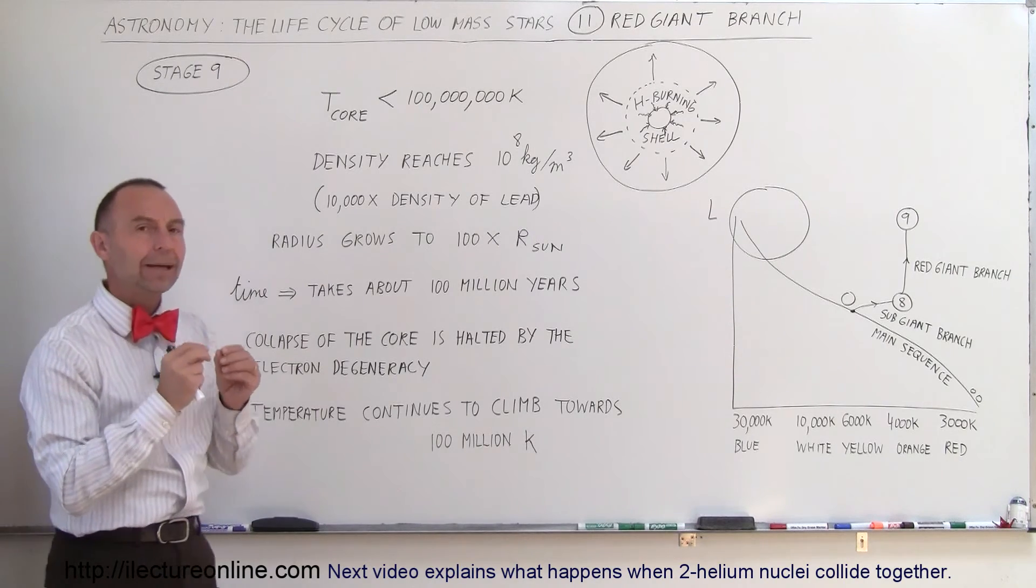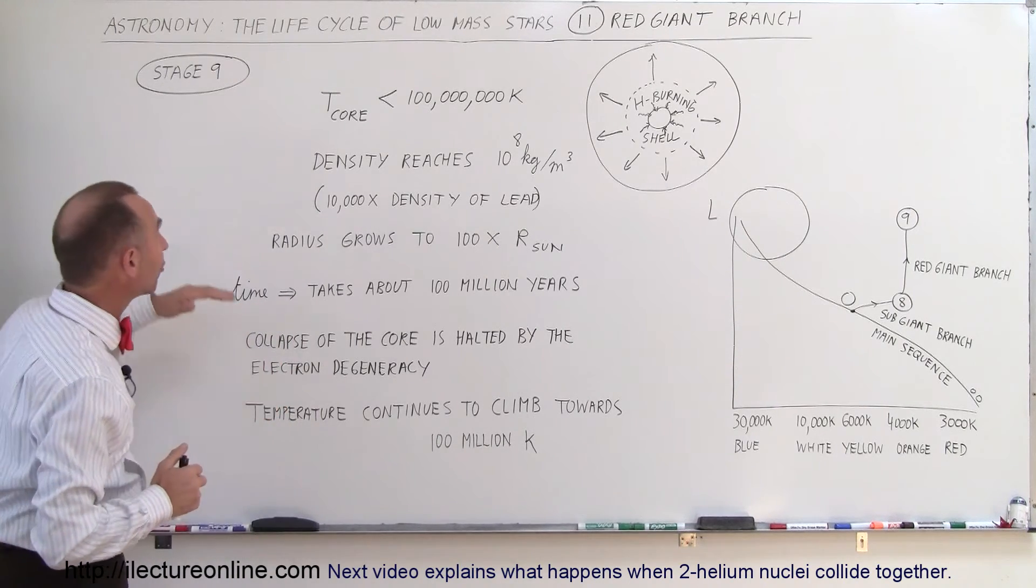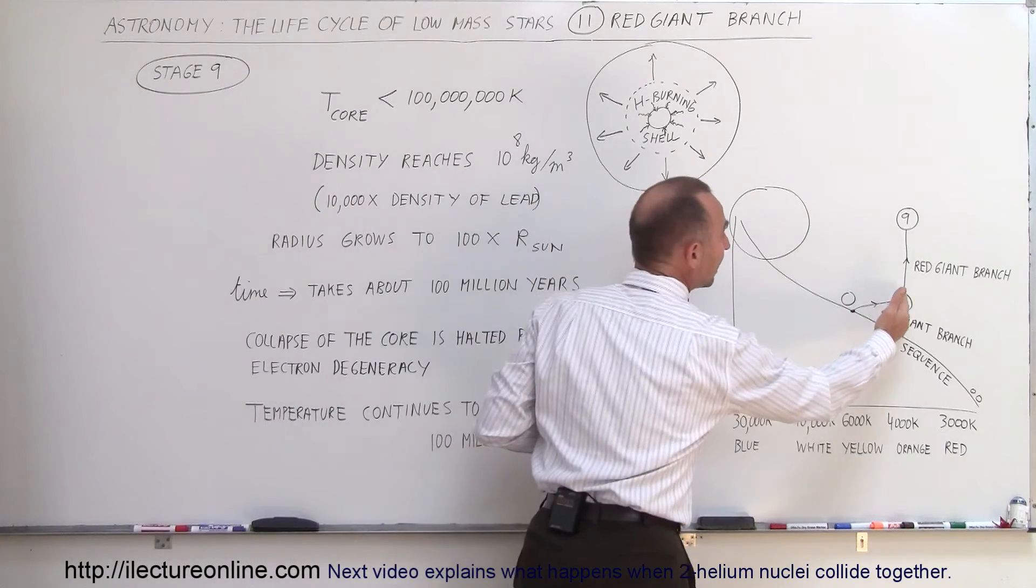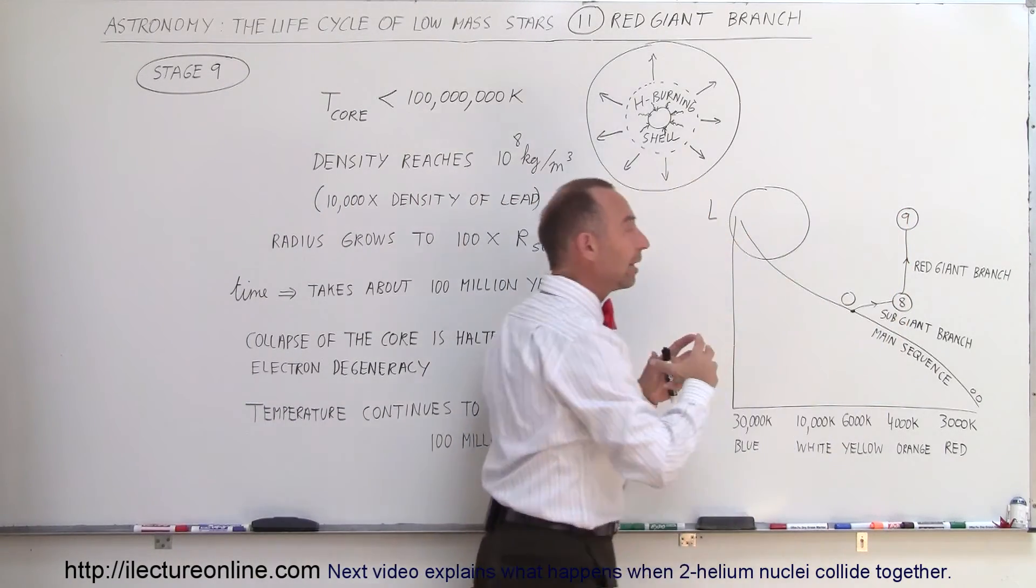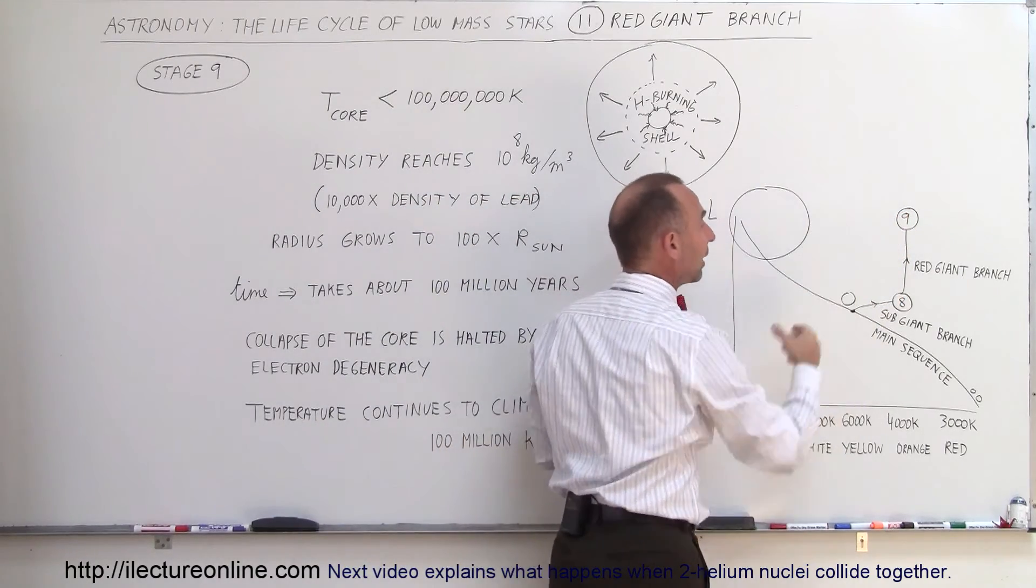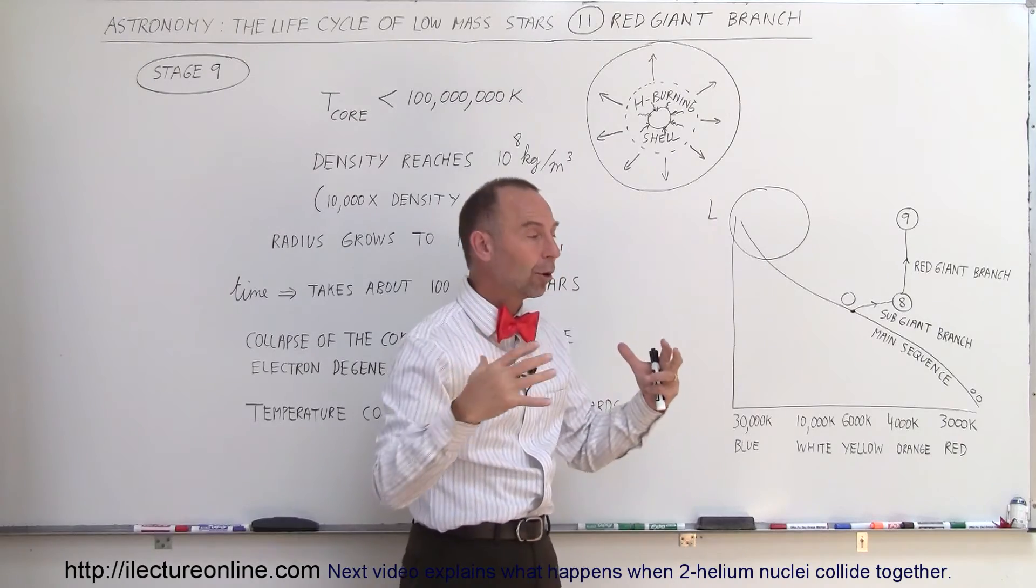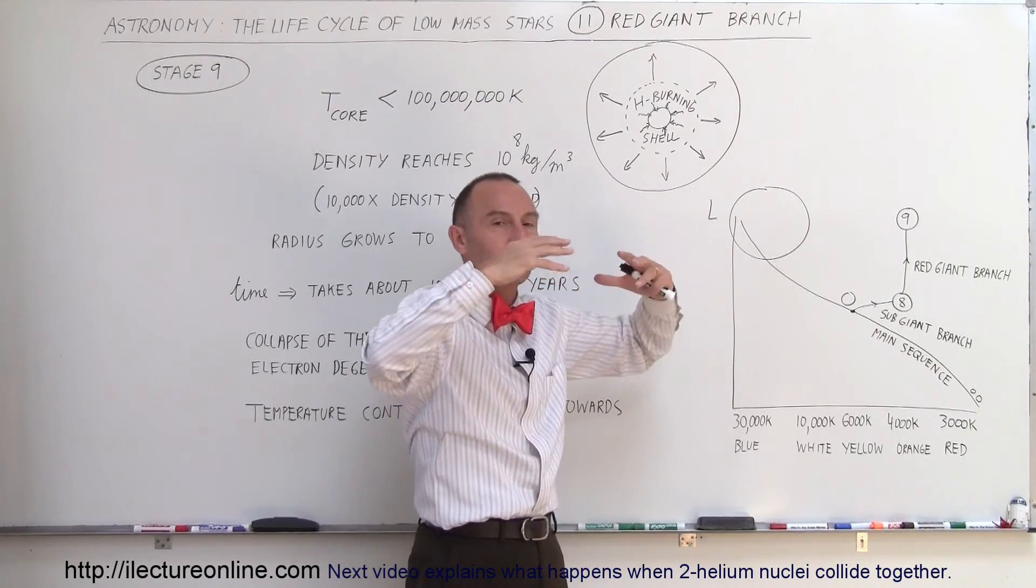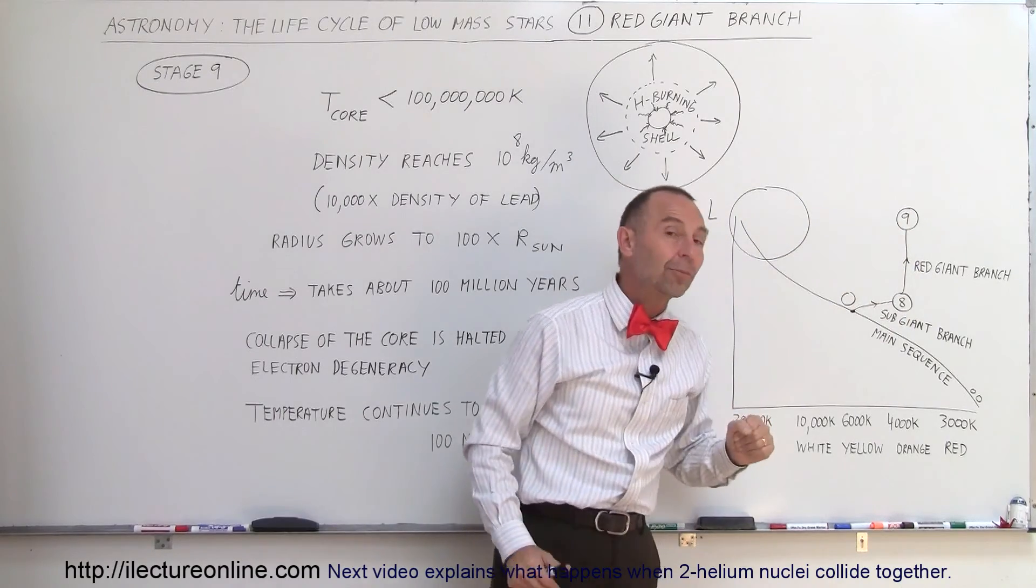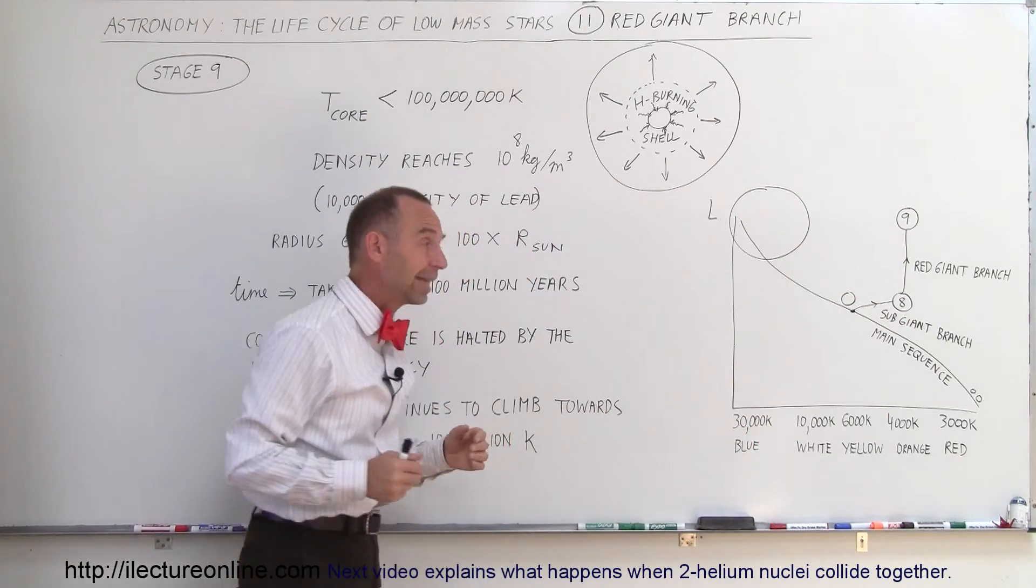Now we're in stage 9 of the star where we're creeping up on the red giant branch. Notice the luminosity of the star is increasing by tremendous amounts, not because the edge of the star is getting warmer, but simply because the size of the star grows tremendously. We know by the amount of the climb on the red giant branch how much bigger the star has to get.